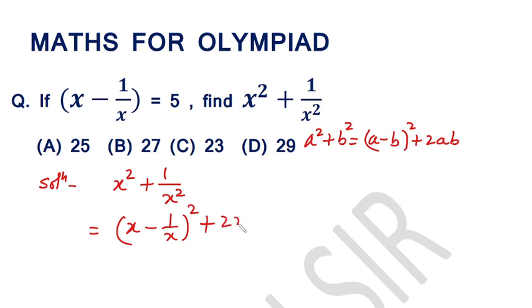2 into x into 1 over x. Cancel this x and x.